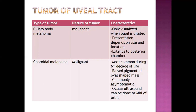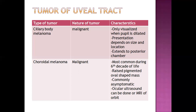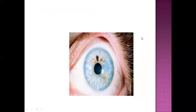Ocular ultrasound or MRI can be performed to find the cause. As noted, the tumor of the uveal tract is visualized only when the pupil is dilated.